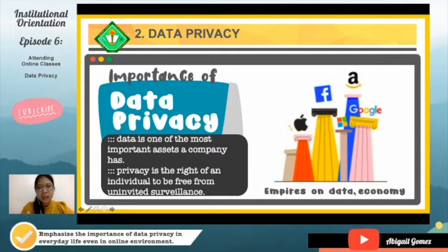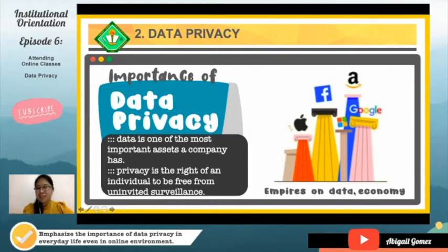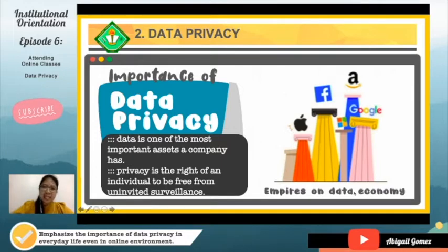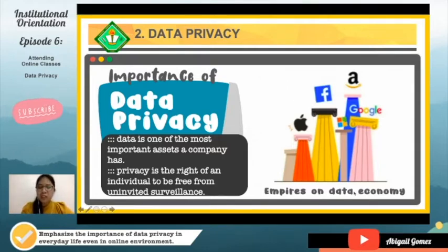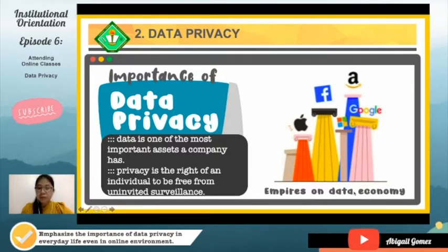If you search for something on Facebook — say, a wedding dress — in the following days you'll see promotions and advertisements about dresses in your feed. This means your interests and likes are easily accessible at a digital scale. This is technology — we generate digital footprints, and because of those digital footprints, we become targets of various companies and their advertisements. So you have to be very careful with that.